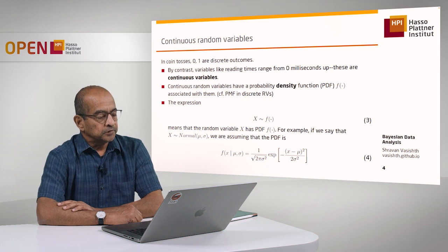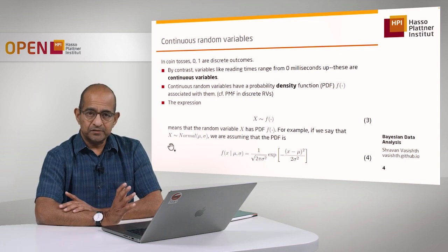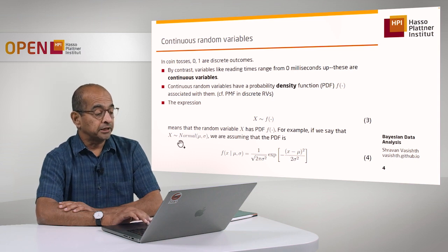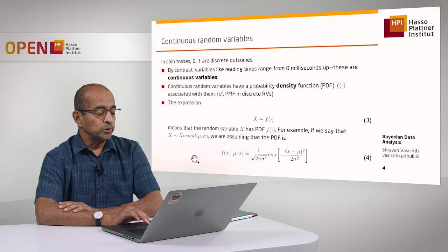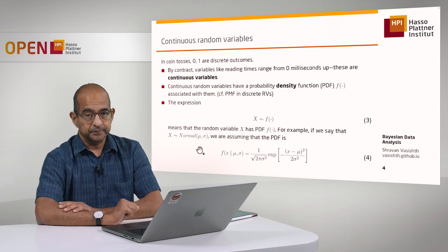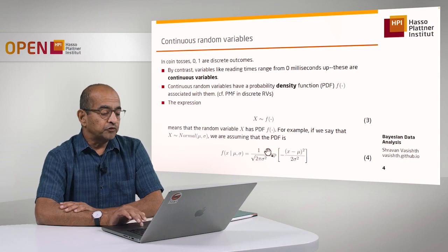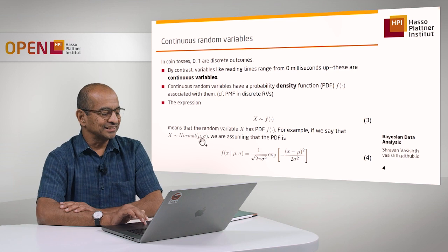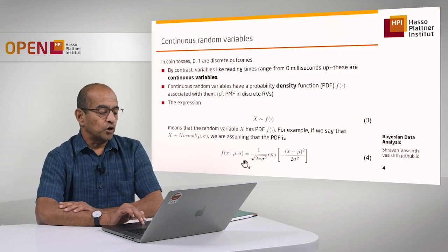Let's look at an example you must have seen if you've done any data analysis in the past. I'm going to assume that the data are being generated from a normal distribution with some mean mu and some standard deviation sigma. These are called the location and scale parameters, and the way I would write the probability density function for this continuous random variable would be in this form.